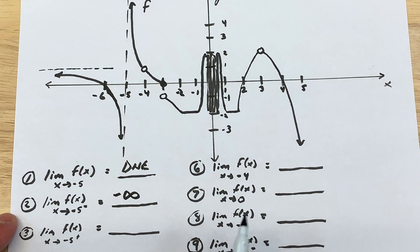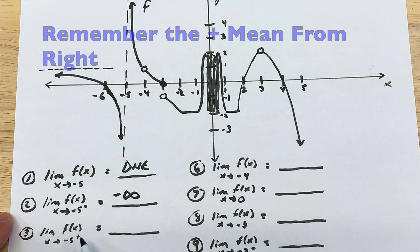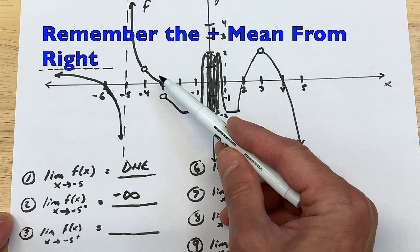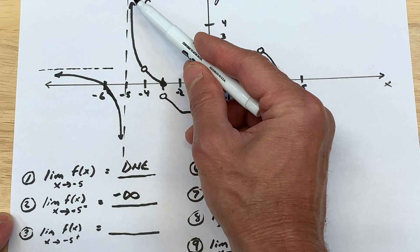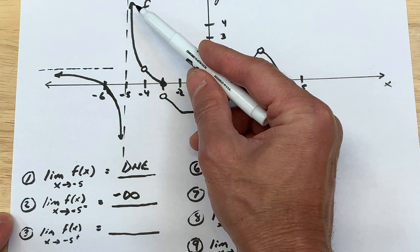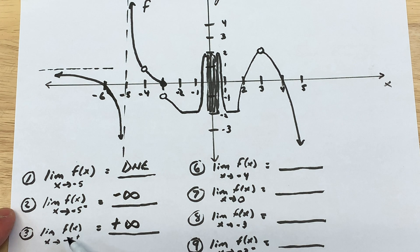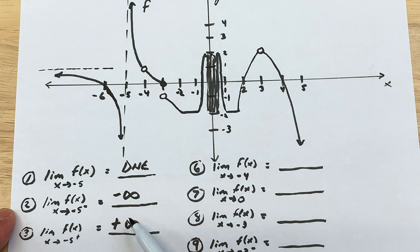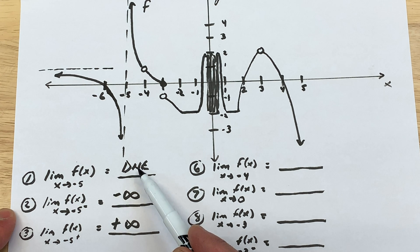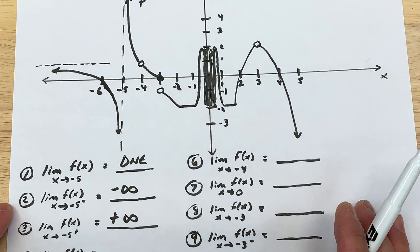For number three: the limit as x approaches negative 5 from the right — see that little plus sign? That means from the right side. Approaching negative 5 from the right, you can see the y values are going up towards positive infinity. Notice that approaching from the left and from the right gives two different values — that's why the overall limit didn't exist: the left-hand limit and the right-hand limit didn't match.